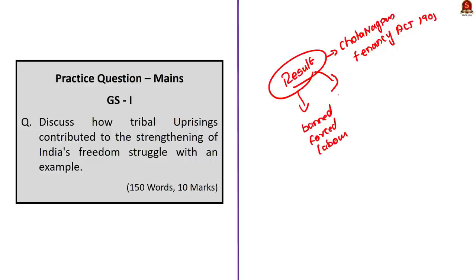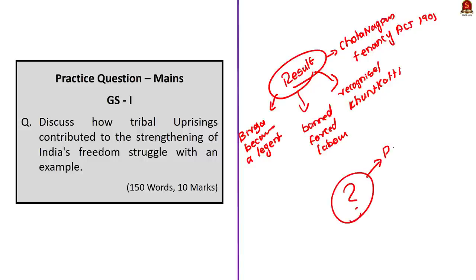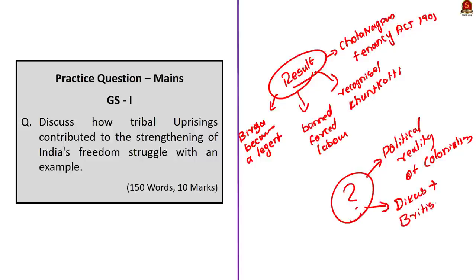Birsa Munda became a legend among the tribals of Chota Nagpur and a symbol of anti-feudal and anti-colonial struggle. Presently, he is worshipped as Bhagwan in the state of Jharkhand. The Munda rebellion was so important because it created awareness about the political reality of the colonial state. Unlike other tribal rebellions, it not only focused on the Dikkus — their immediate enemies — but also fought against the entire British Raj. It was this political awareness and ability to connect to the broader political reality that made both the Munda rebellion great and Birsa Munda a legend.